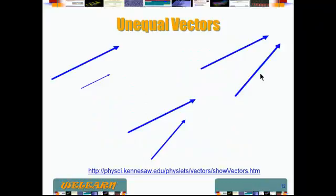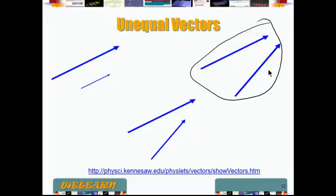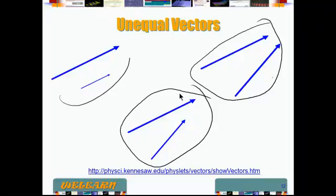What makes two vectors unequal? That's the opposite of what we just talked about. They can be unequal if the magnitudes are different even though the direction is the same. Or the magnitudes are the same but the directions are different. In the first case they are unequal because the magnitude is different; here they are unequal because the direction is different even though the magnitude is the same; and here they are different because both quantities are different — the magnitude is different and the direction is different.